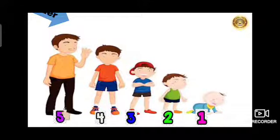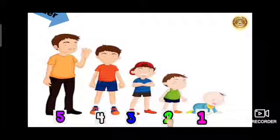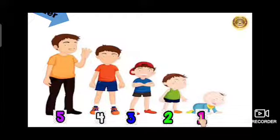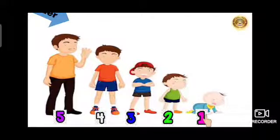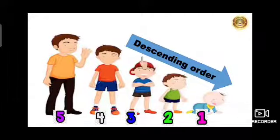1 is the smallest among these 5. The biggest one is the 5th number and the smallest one is 1. All numbers 4, 3, 2, 1 are smaller than 5, and 1 is the smallest number — meaning 2, 3, 4, 5 are all bigger than 1. So arranging numbers from bigger to smaller is called descending order. Arranging numbers from biggest to smallest is called descending order.